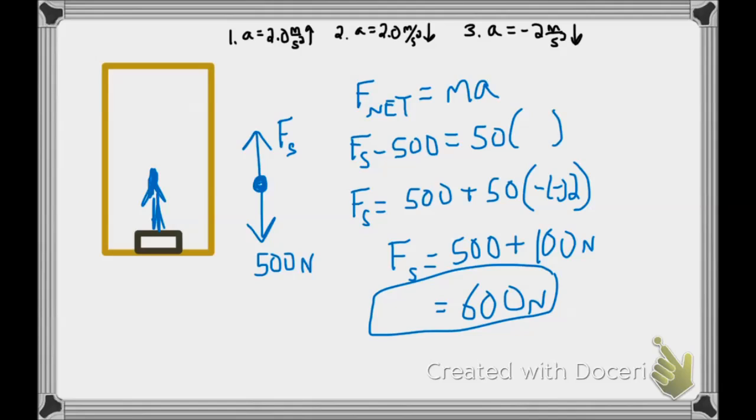And what would happen if the elevator was going at a constant velocity? Well, that would just mean an acceleration of zero.